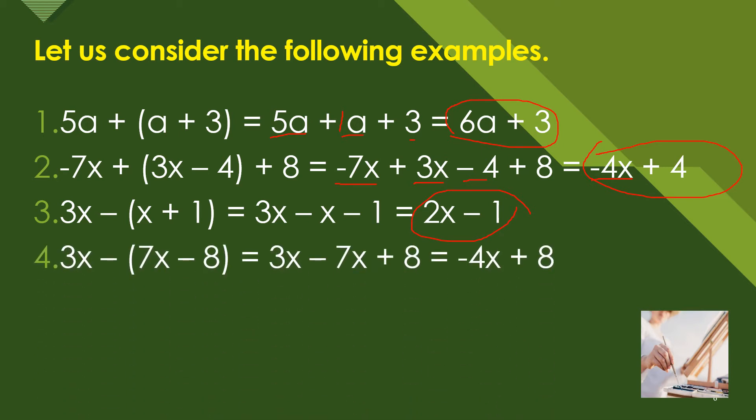We have 4x minus (7x - 8). So we extract, 3x minus 7x plus 8. We have 7 minus 3, that will become -4x plus 8. All you have to do is combine the same positive or the same negative, and then copy. We could say that 10 minus 9.